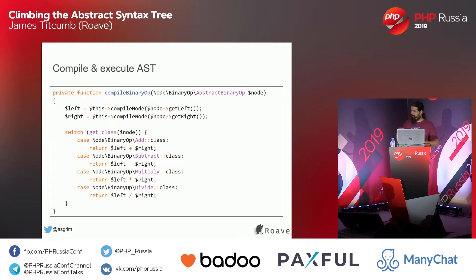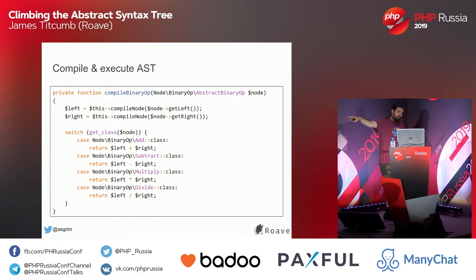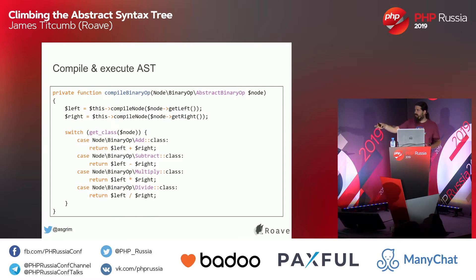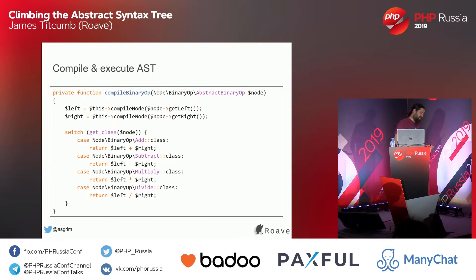Now we've got our AST. This is the easy part — we're going to execute it. This is the virtual machine part. We descend through the tree and execute it as we go. We have a function called compile_node. If it's a binary operator, we call another function; if the node is an integer value node, we return the value. For the binary operator, we recursively compile the left and right operands — they could be just numbers or operators with operands attached. Once we've done that, we execute the appropriate sum.